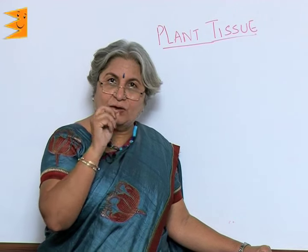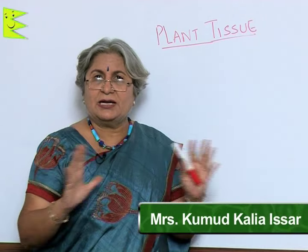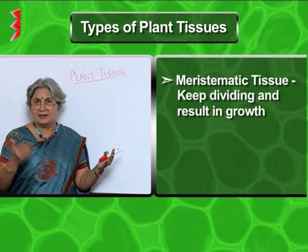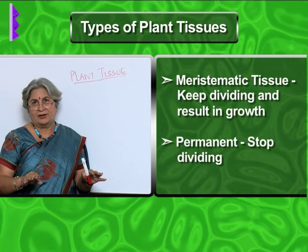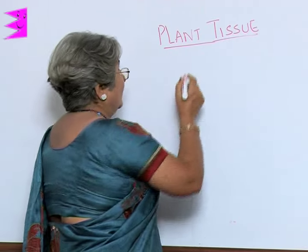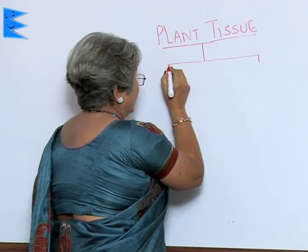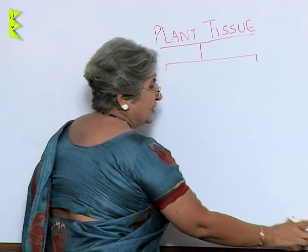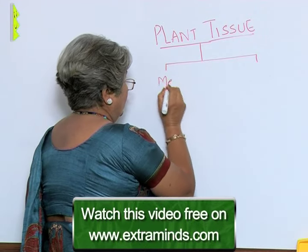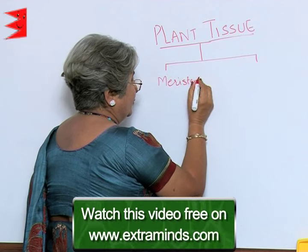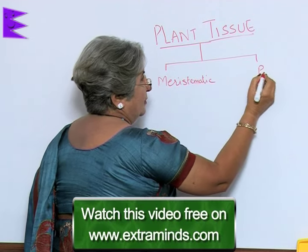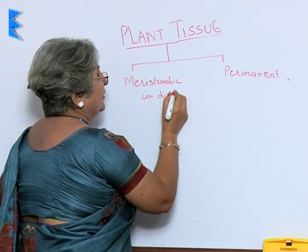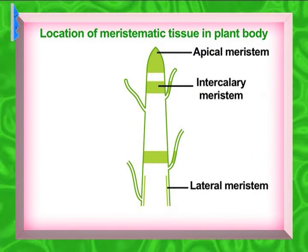As plants have localized areas for growth, we can broadly divide plant tissue into two types: meristematic tissue, which can keep dividing and result in growth, and permanent tissue, which stops dividing. Meristematic tissue is present only in specialized areas.